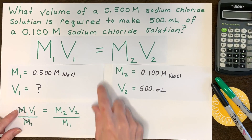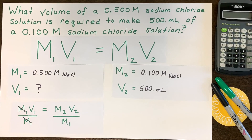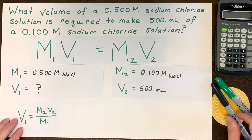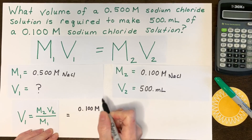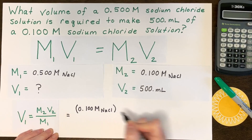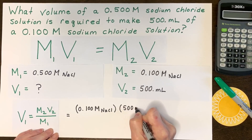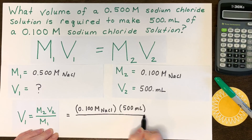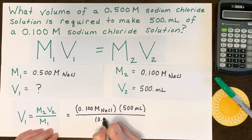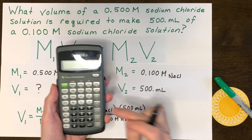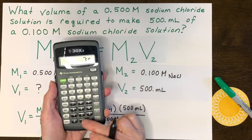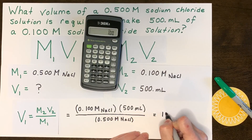Take the equation and divide both sides by M1 to isolate V1. Keeping the volume in milliliters, plug in the numbers: V1 = (0.100 M × 500 mL) / 0.500 M. You take 0.1 times 500 and divide by 0.5, and you get exactly 100 milliliters.